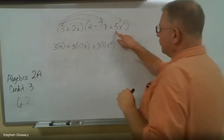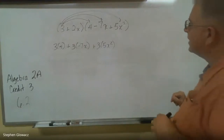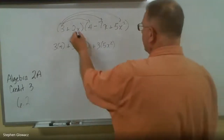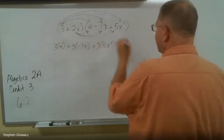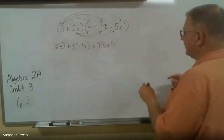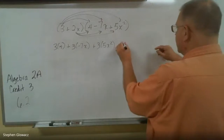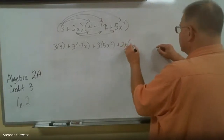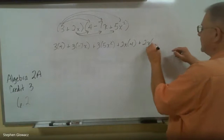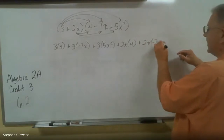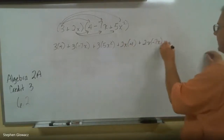So that's done. Now before we simplify, we have to multiply 2x to everything in the second parentheses, just like we multiplied the 3. So we have 2x times 4, 2x times negative 7x, and then 2x times 5x².